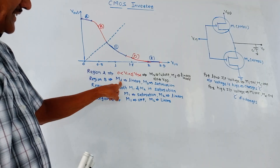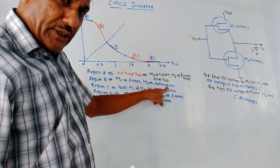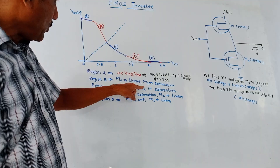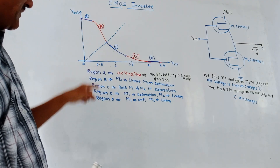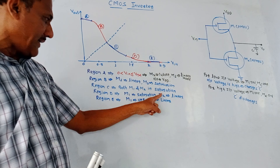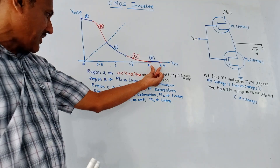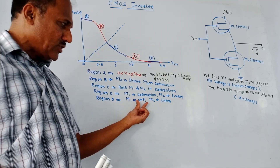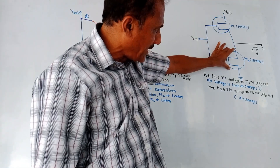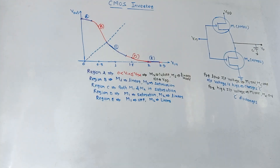In Region B, M1 is in linear mode — keep in mind M1 is P MOSFET — and M2 goes into saturation. Since M2 goes into saturation (it was earlier in cutoff), output voltage starts decreasing. In Region C, both M1 and M2 are in saturation mode. In Region D, M1 is in saturation and M2 is in linear mode. In the last region, M1 is off and M2 is in linear mode — P MOSFET is switched off and N MOSFET is switched on, so discharging of the capacitor takes place. This is the transfer characteristics, or graph of Vout versus Vin, for CMOS inverter.